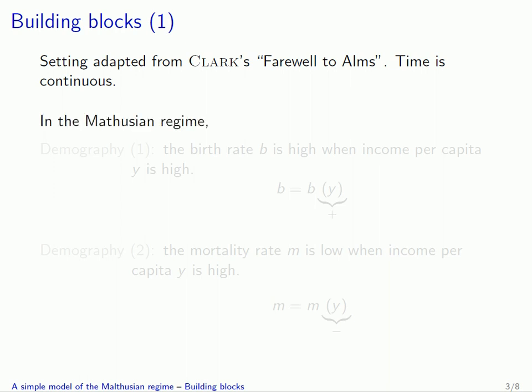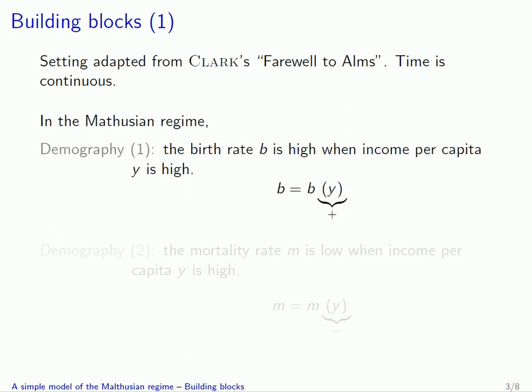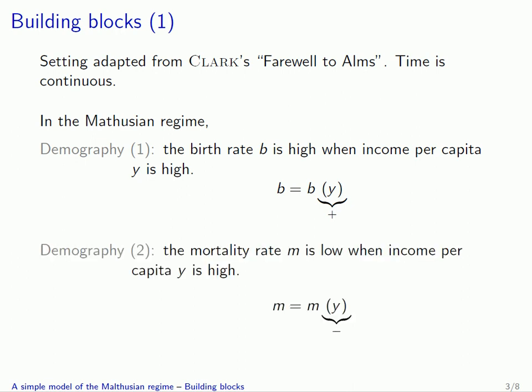We have several assumptions that apply to the Malthusian regime. Our first two assumptions concern demography. The first one is about the birth rate, small b, which is higher when the income per capita, small y, is high — due, for instance, to the availability of food.